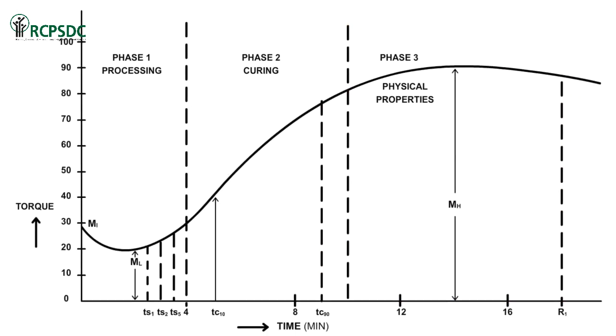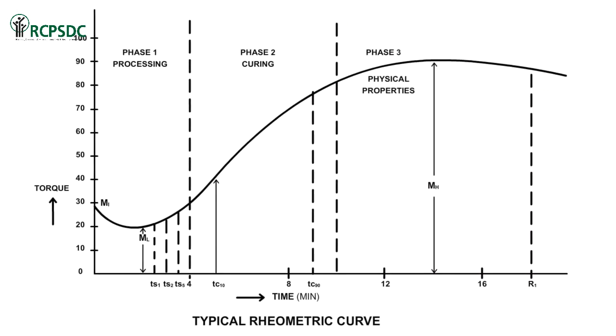In the rheometric curve, the following values are obtained automatically by the device. Stock values like MI, ML, MH or MHR. Time values like TS1, TS2, TS5, TC10, TC50, TC90. And derived values like thermoplasticity, curing speed, and reversion time.